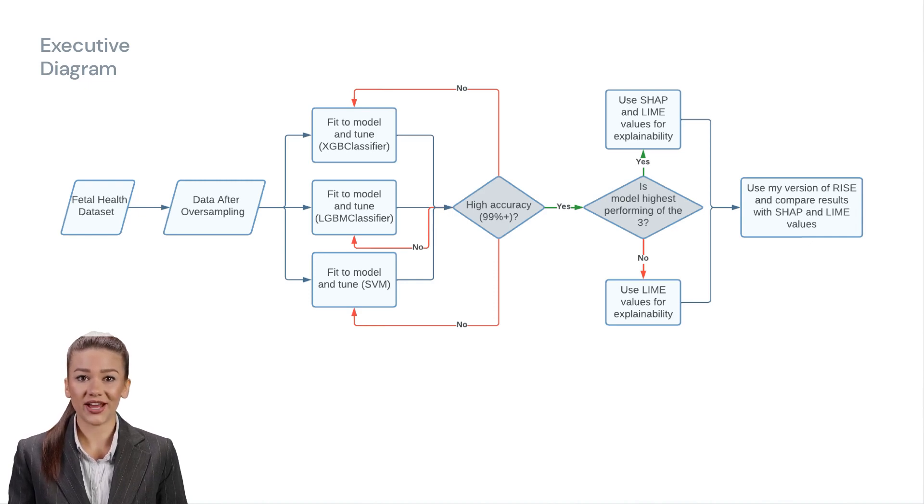The exams were then annotated by three expert obstetricians into three classes. Class 1 refers to normal health, class 2 indicates a possible risk to the fetus, and class 3 is pathological. For each instance, the obstetricians agreed on one classification. For each examination by the CTG, 21 features were recorded.